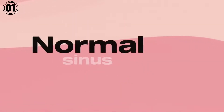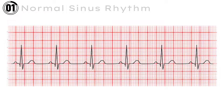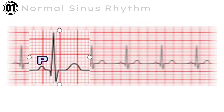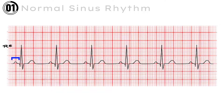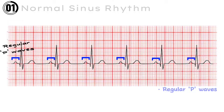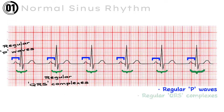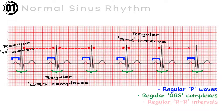Let's start with our first ECG: Normal Sinus Rhythm. A normal sinus rhythm has five waves — P, Q, R, S, and T. There are regular P waves, which are followed by regular QRS complexes, and regular RR intervals.